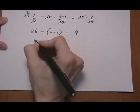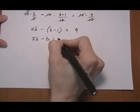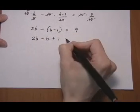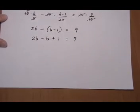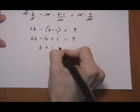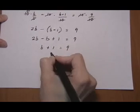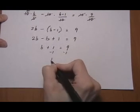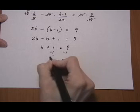Clearing parentheses. 2B minus B plus 1. So watch the sign change there. Equals 9. Combine like terms. B plus 1 equals 9. Take away 1 on both sides. And we get our answer. B equals 8.